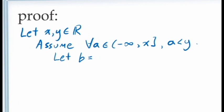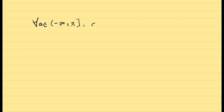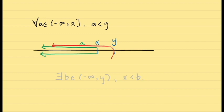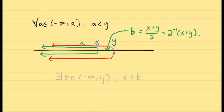To figure out what value of b we should assign, let's get out a scrap piece of paper. Our assumption tells us that for all values of a in the closed interval from negative infinity to x, a is strictly less than y. If we view the real numbers as a number line and place x somewhere, any value of a to the left of x will have y to the right of it. Since this is a closed interval including x itself, y must be somewhere to the right of x. We need a value of b in the open interval from negative infinity to y — to the left of y — for which x is less than b. The simplest choice is the value halfway between x and y, which is the average (x + y) / 2.